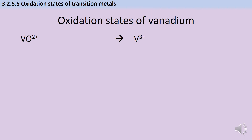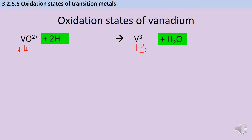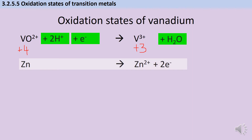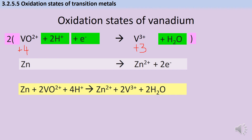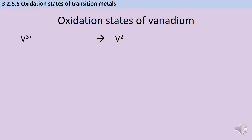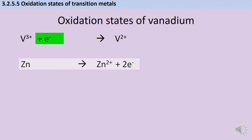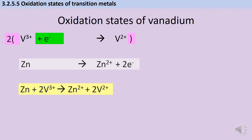The next part of the reduction is very similar. We have one vanadium atom on either side: the right-hand side is the plus-three monatomic ion, and on the left is vanadium with oxidation state plus four. There's an oxygen on the left, so we add a water molecule to the right and two hydrogen ions to the left — again requiring acidic conditions. We balance the electrons, then double the top equation to match the two electrons lost by zinc, giving an overall equation. For the final stage — plus three to plus two — it's straightforward with two monatomic ions: just add one electron to balance, then double when combining with zinc.